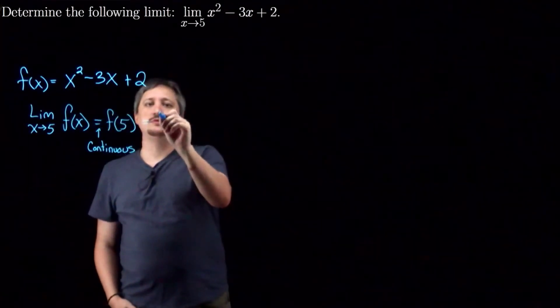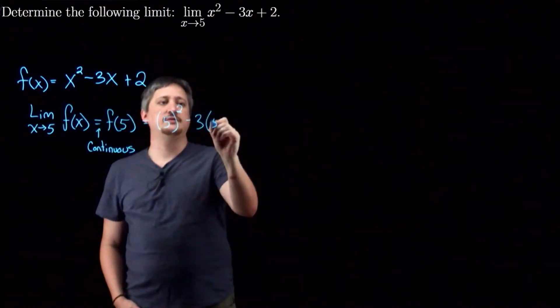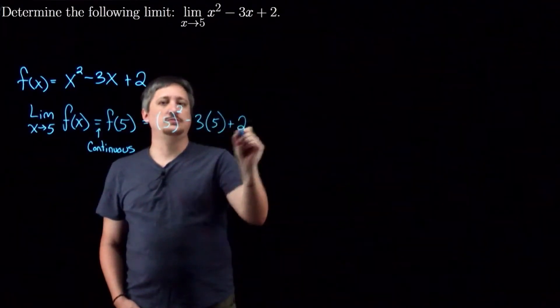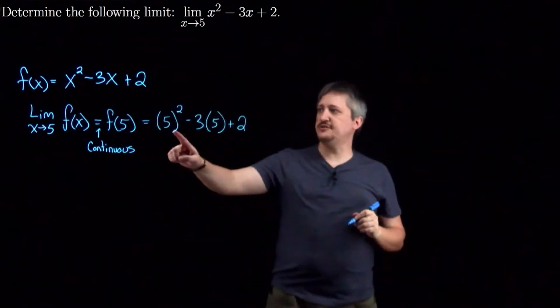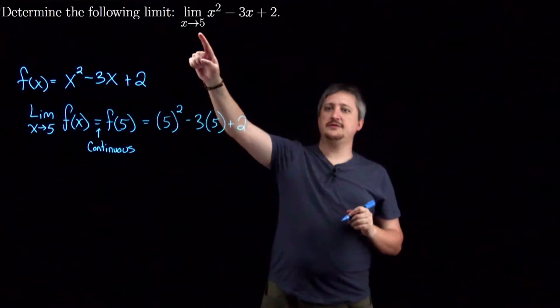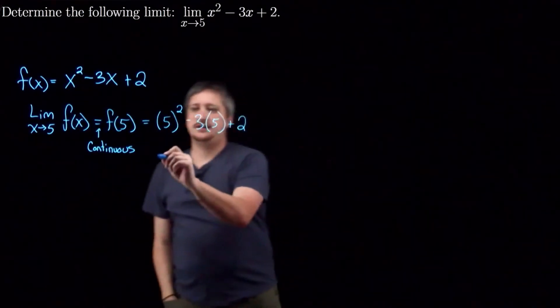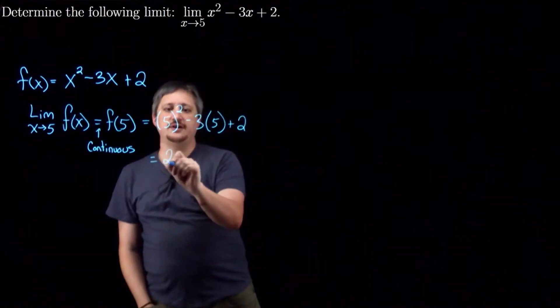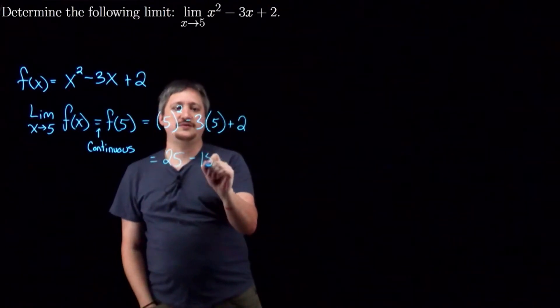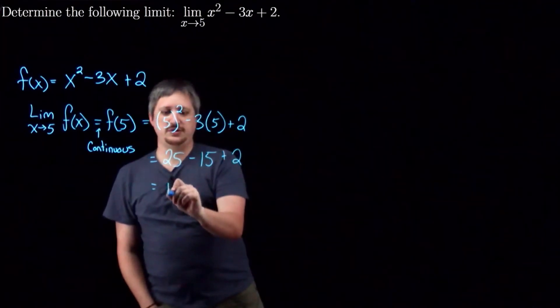So I'm going to do 5 squared minus 3 times 5 plus 2. So this is just plugging the 5 in to what I'm taking the limit of. Write the limit x going to 5, plug in, and just compute this. I get 25 minus 15 plus 2, which is 10 plus 2 is 12.